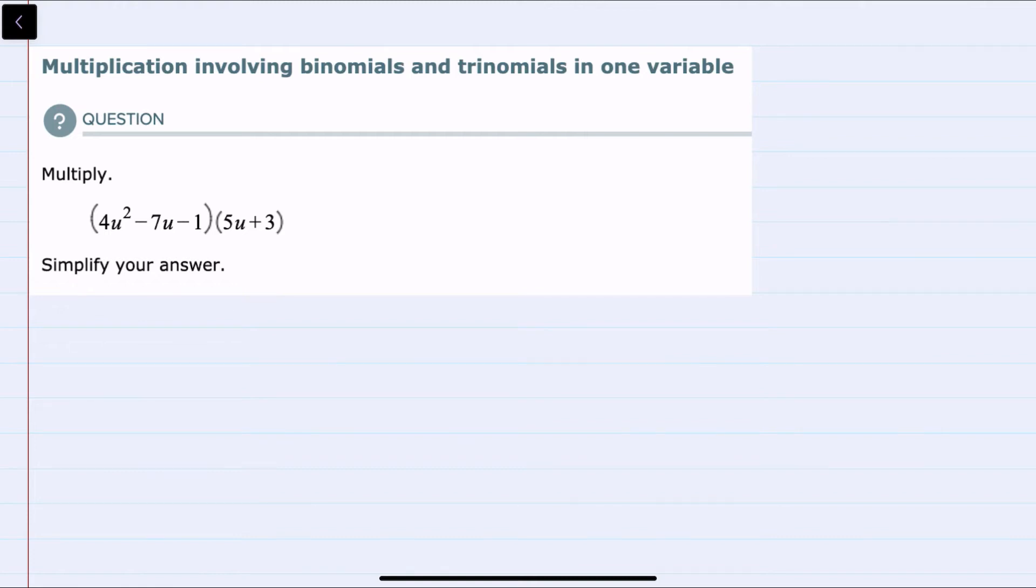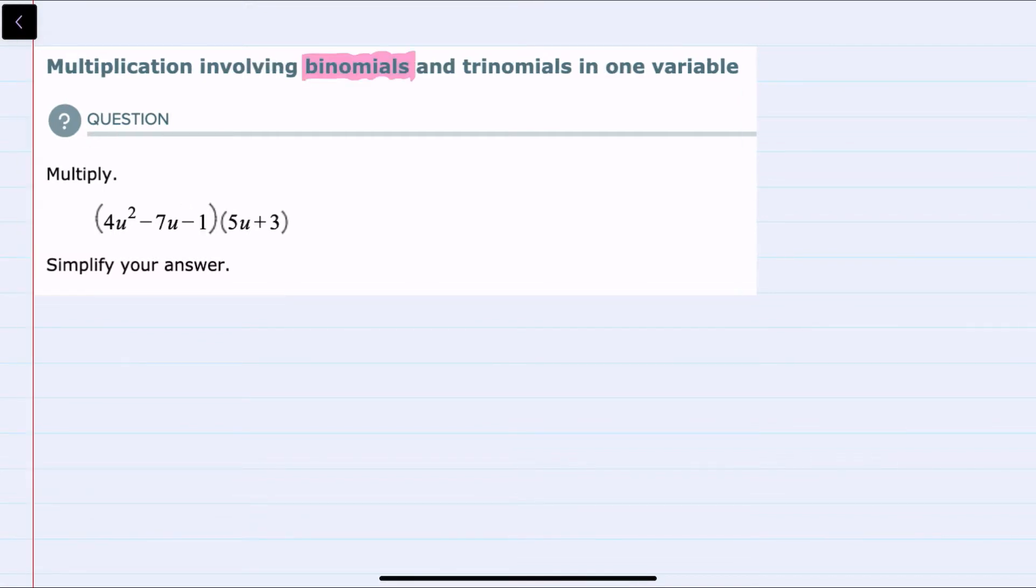Hello, in this video I'll be helping you with the ALEKS problem type called multiplication involving binomials and trinomials in one variable. From the description, we have a binomial that's being multiplied by a trinomial and only one variable here, which is u.